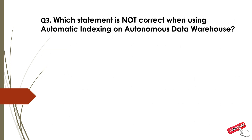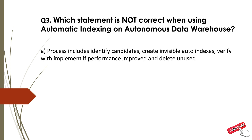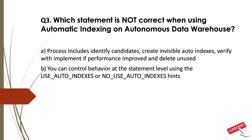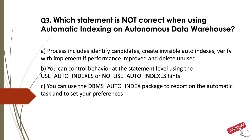Question 3: Which statement is not correct when using automatic indexing on Autonomous Data Warehouse? Option A: Process includes identify candidates, create invisible auto-indexes, verify with incremental performance improvement, and delete unused. Option B: You can control behavior at the statement level using the USE_AUTO_INDEXES or NO_USE_AUTO_INDEXES hints. Option C: You can use the DBMS_AUTO_INDEX package to report the automatic task and to set your preferences. Option D: It is enabled by default.